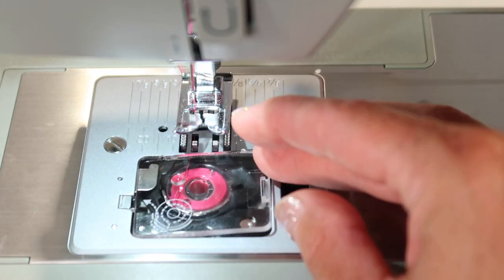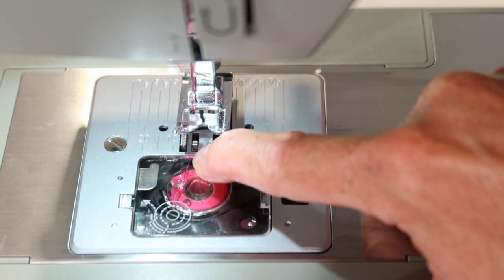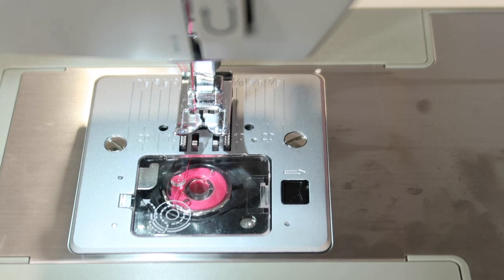Replace the bobbin cover and make sure that is on, and again, you can see that little thread where it's sitting, so at a glance, you can always tell if your bobbin is correctly threaded through the little window. Let's go.